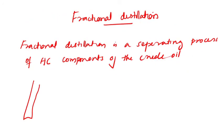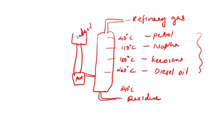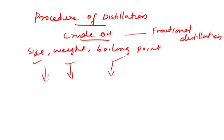Fractional distillation is a separating process of hydrocarbon components of the crude oil, and it differs from simple distillation in that it separates a mixture into different fractions. The setup contains a long column fitted above the mixture, with several condensers at different heights. It is cold at the top and hot at the bottom, so high boiling point substances condense at the bottom and low boiling point substances at the top. According to the size, weight, and boiling point of the crude oil components, we can separate them.